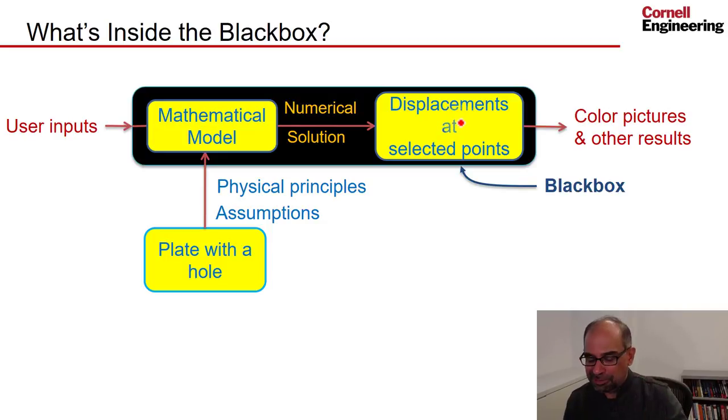That numerical solution gives you displacements at selected points, and we'll see what the selected points are. It's not going to calculate everything everywhere. It calculates selected variables—displacements in this case—at selected points. Once we have the displacements at these selected points, we can construct everything else, the strain, the stresses, through post-processing.